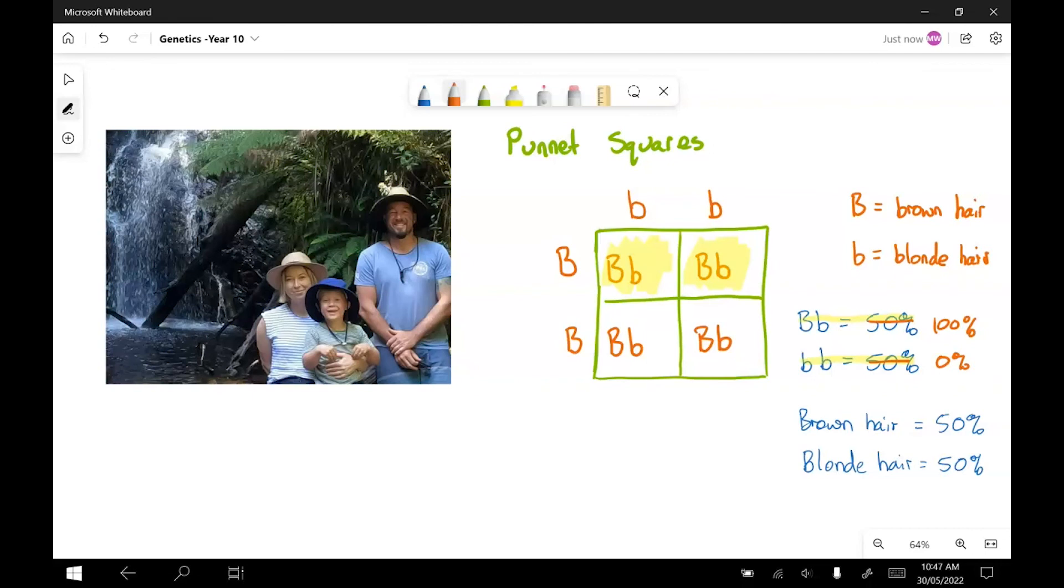When you go to answer these questions in the test, you're going to be looking for the words dominant and recessive. You're going to be allocating them letters like we have done here, and then you'll be solving it. So let's do one more, and let's stay with my family as an example.